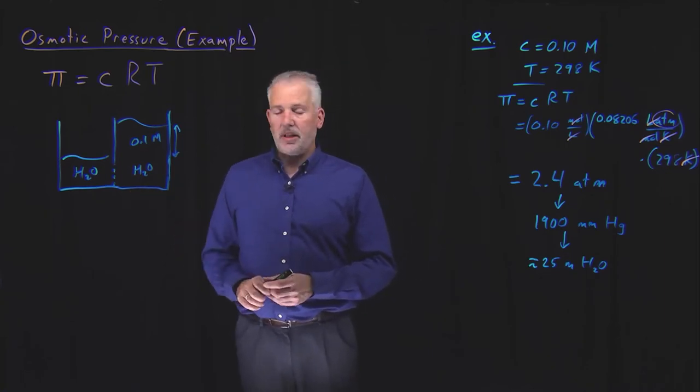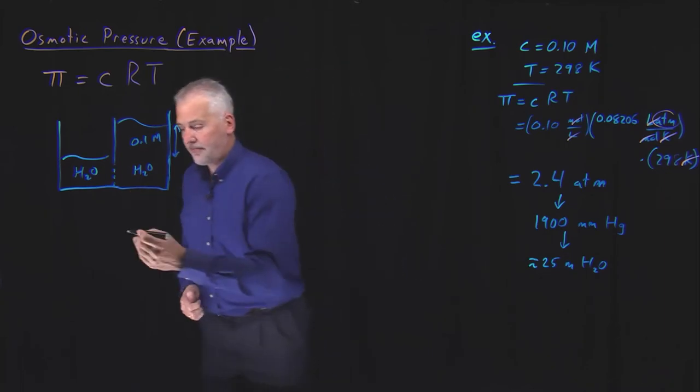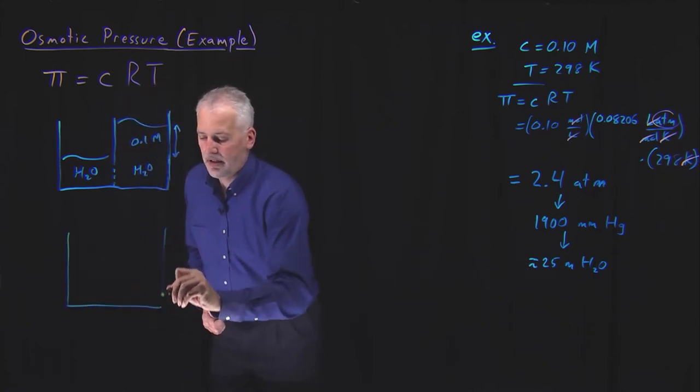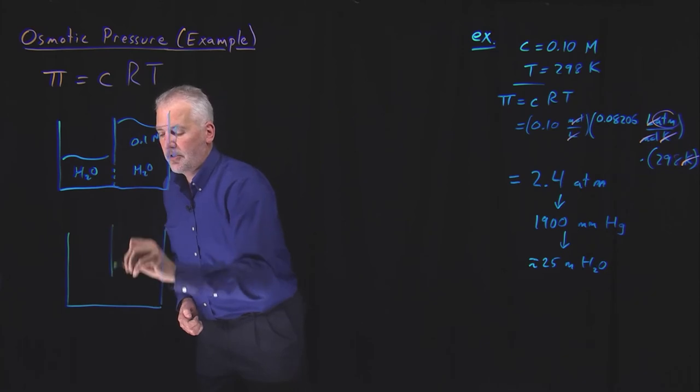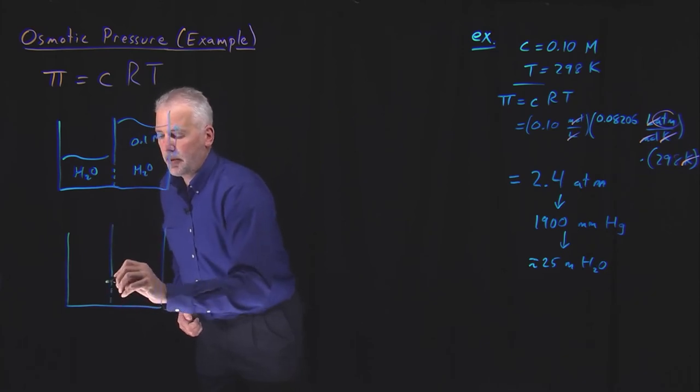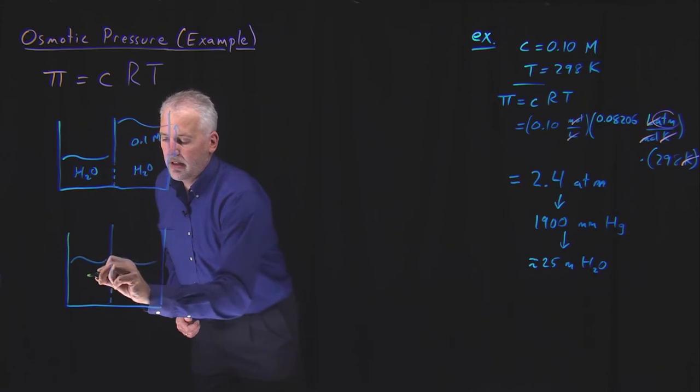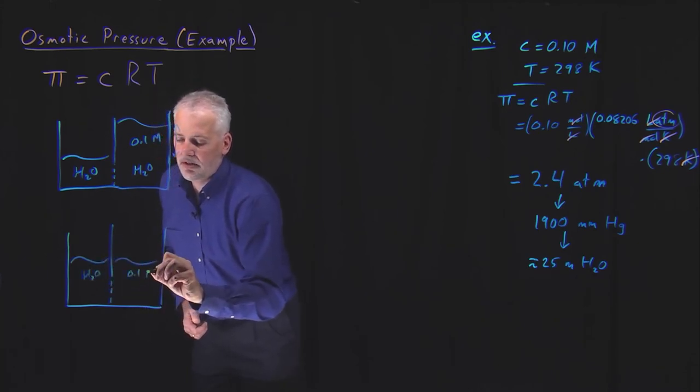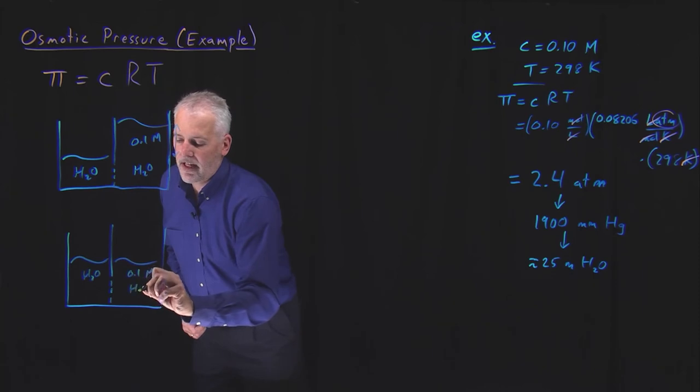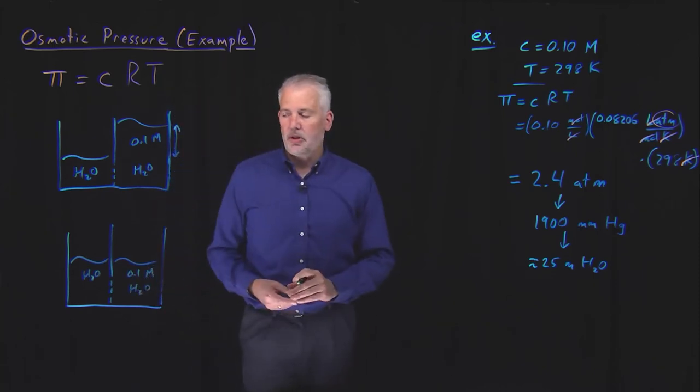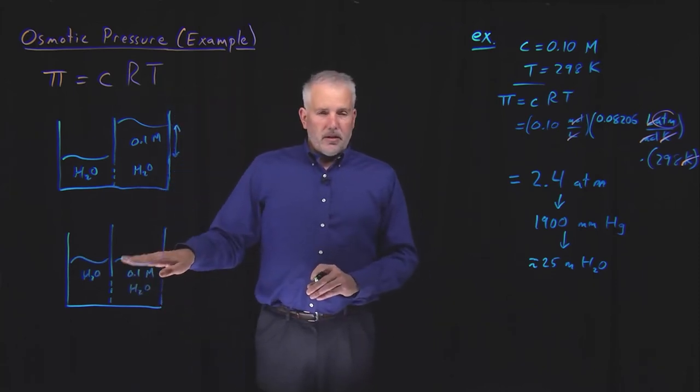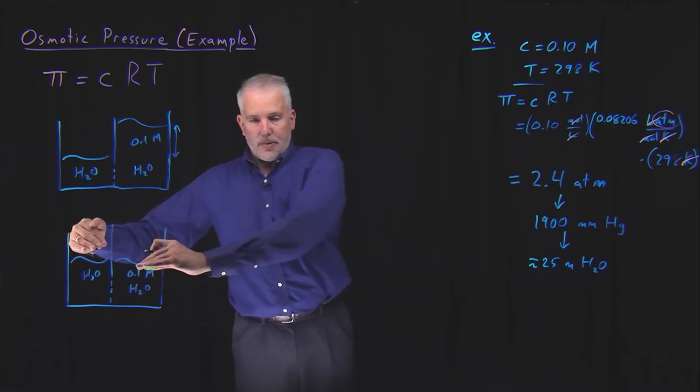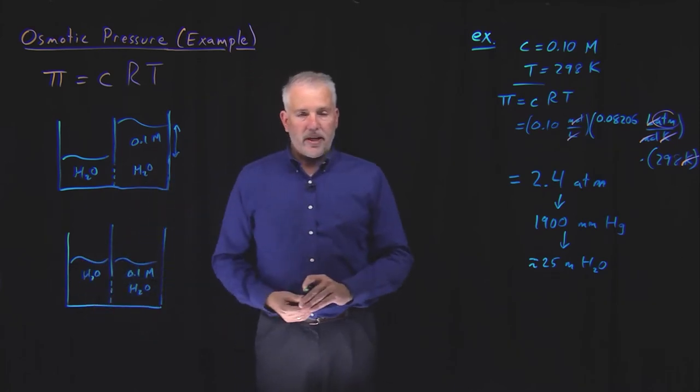Often where this becomes more interesting is in the reverse case. Let me go back to a case before the osmosis had happened. So here's two beakers separated by a semi-permeable membrane. In this case, I'm going to let the heights of the solution be equal at the start, aqueous solution 0.1 molar in some solute. Before osmosis happens, this is what the system looked like.